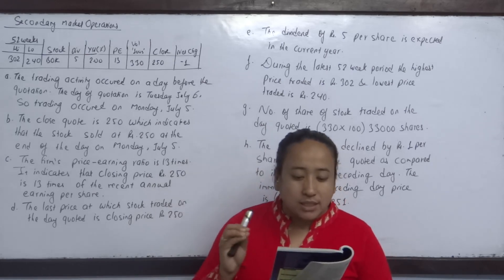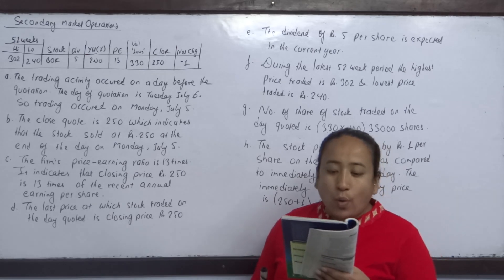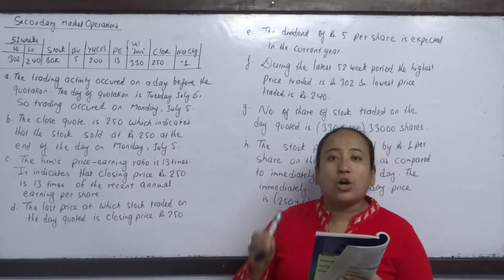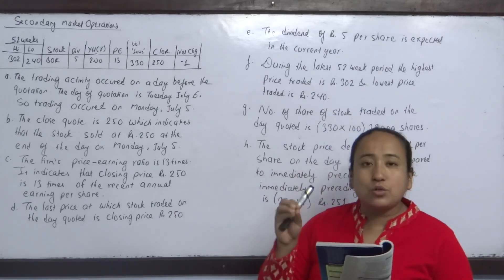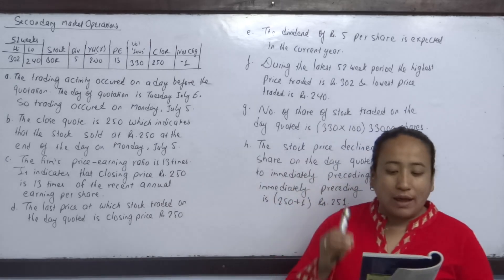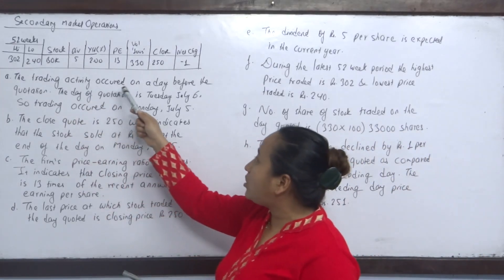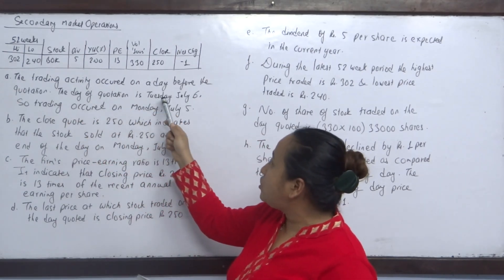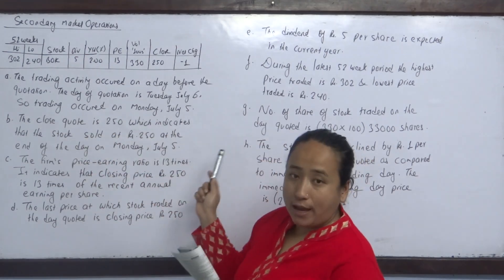Given this information, answer the following questions. On what day did the trading activity occur? The trading activity was recorded in the Tuesday July 6 newspaper, but the trading occurred on Monday July 5. The trading activity occurred on the day before the quotation. The day of quotation is Tuesday July 6, so trading occurred on Monday July 5.